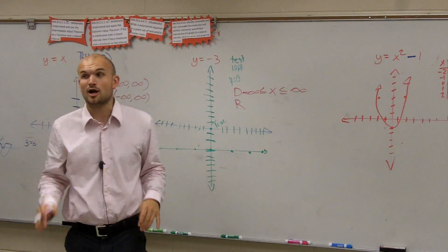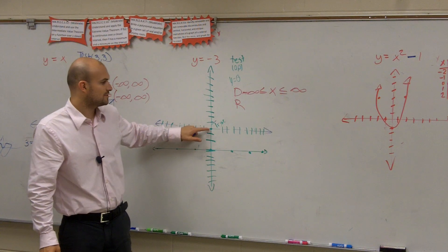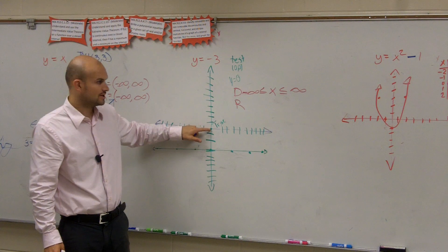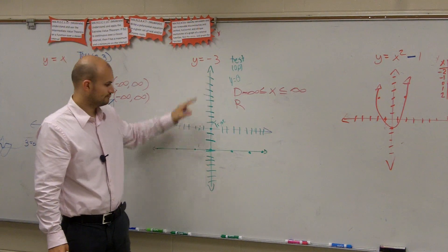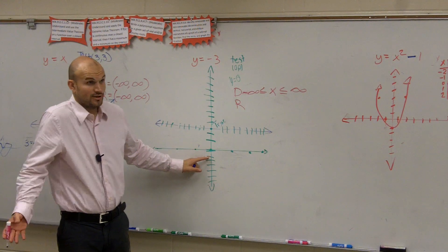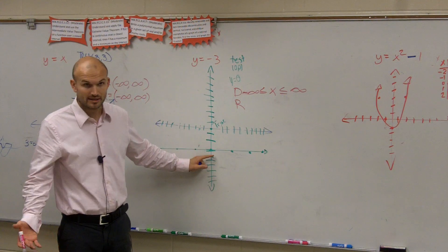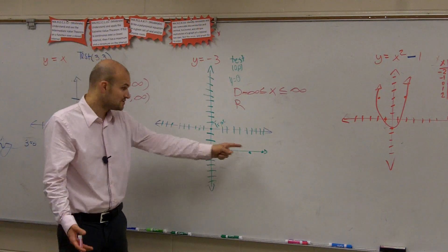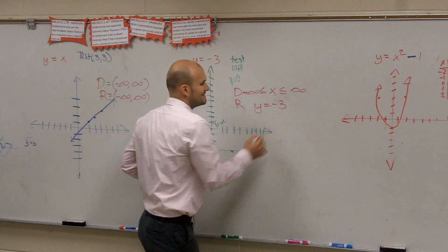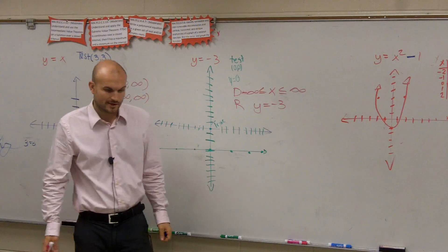Now let's look at my range, because now we're going to start talking about values that aren't a part of it. When y equals 0, is that a part of this graph? What about y equals 5? y equals 8? y equals negative 8? No. What about when y equals negative 3? That's the only part of my range. The only y value that is a part of this graph is negative 3. The x values — you have infinitely many x values that are part of it, but only when y equals negative 3 is your range. So the range for this function is only when y equals negative 3.